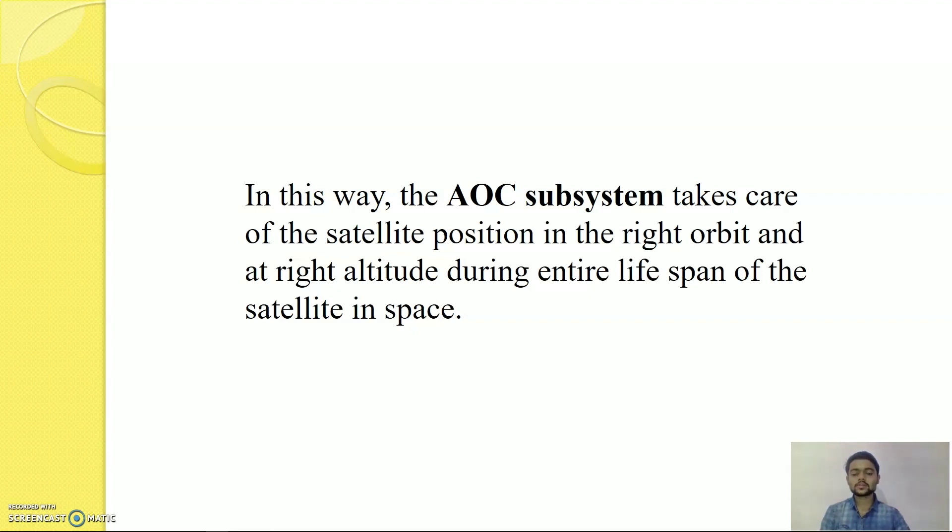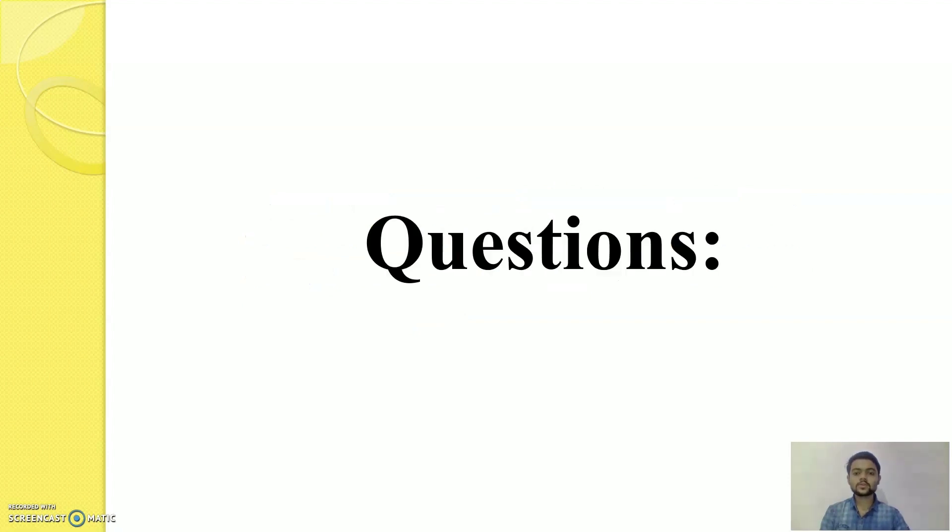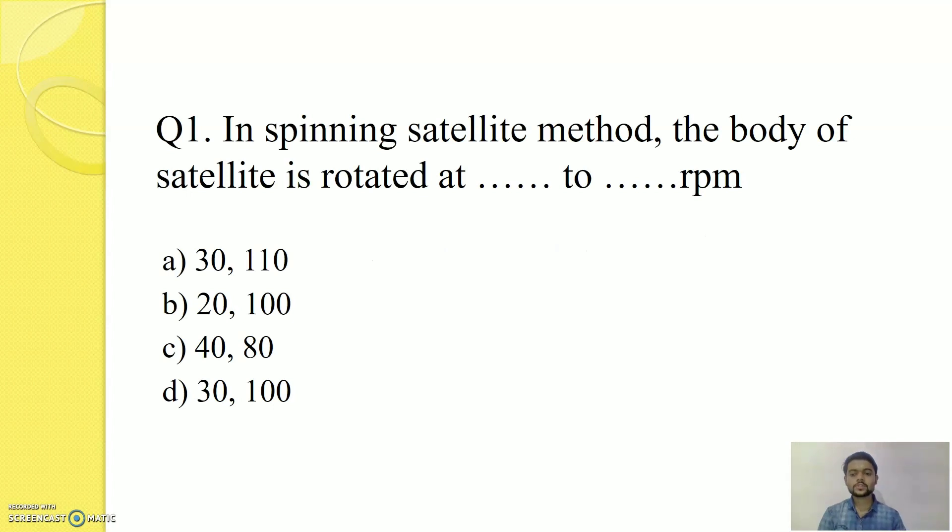Now we will have one question and answer session in which I will provide you 5 MCQs and you have to answer it. I will provide 15 seconds for each question. Let's go to the questions. Your first question is, in spinning satellite method, the body of satellite is rotated at dash dash dash to dash dash RPM. Your timer starts now. Hope you have got the correct answer and the correct answer is D.